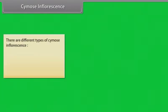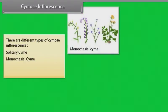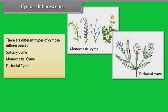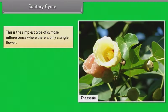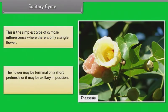There are different types of cymose inflorescence: solitary cyme, monochasial cyme, dichasial cyme, and polychasial cyme. Solitary cyme is the simplest type, where there is only one single flower. The flower may be terminal on a short peduncle or it may be axillary in position. Example: Thespesia.